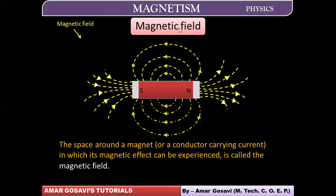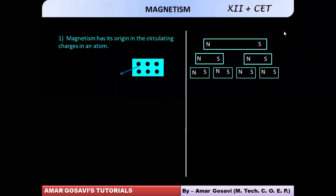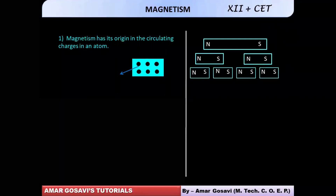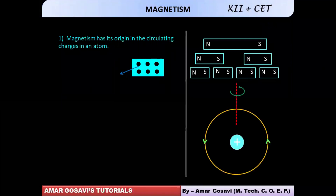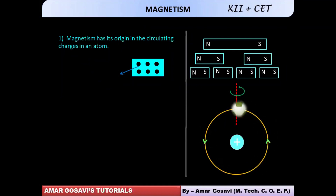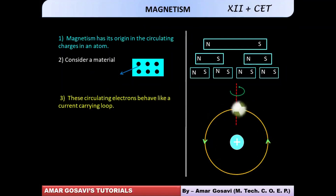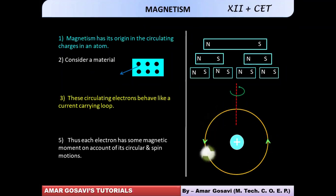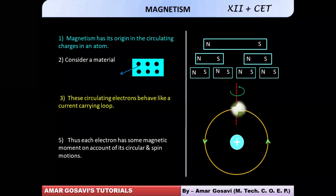Let's have a quick recall about what we've understood regarding the origin of magnetism. Magnetism has its origin in circulating charges in atoms. It will perform two types of motion: orbital motion as well as spin motion. These circulating electrons will behave like a current-carrying loop. Each electron will have a magnetic moment on account of its circular as well as spin motion.